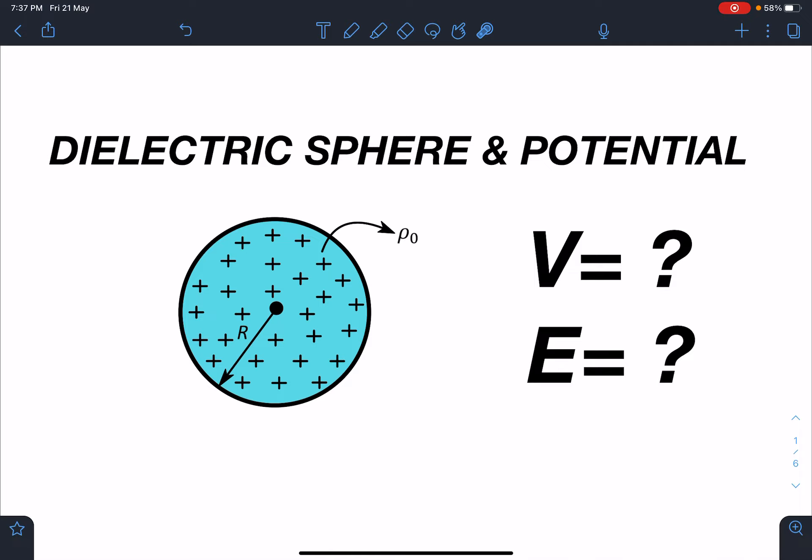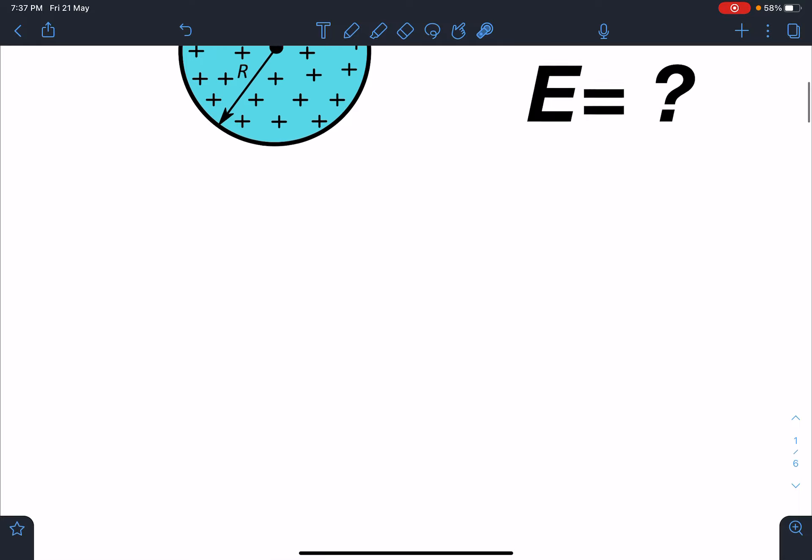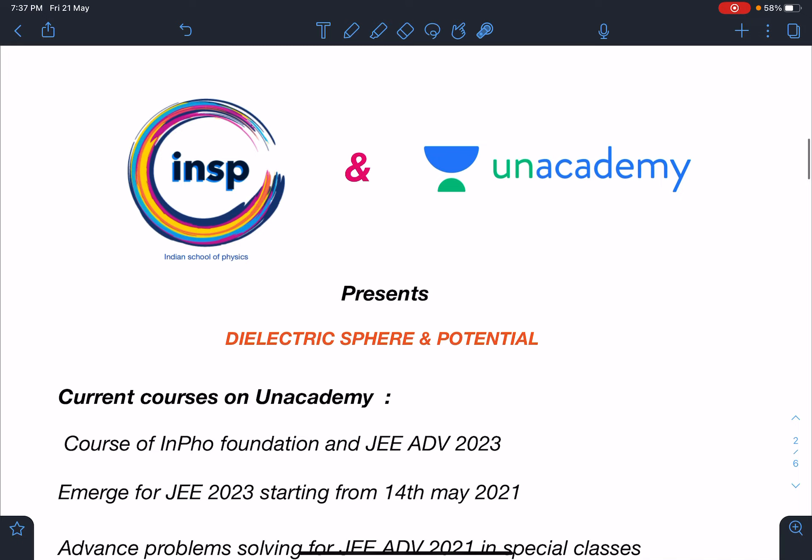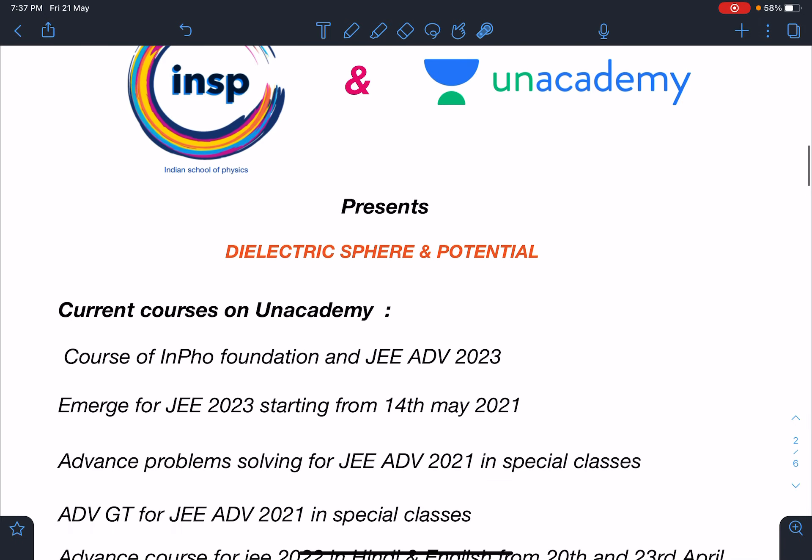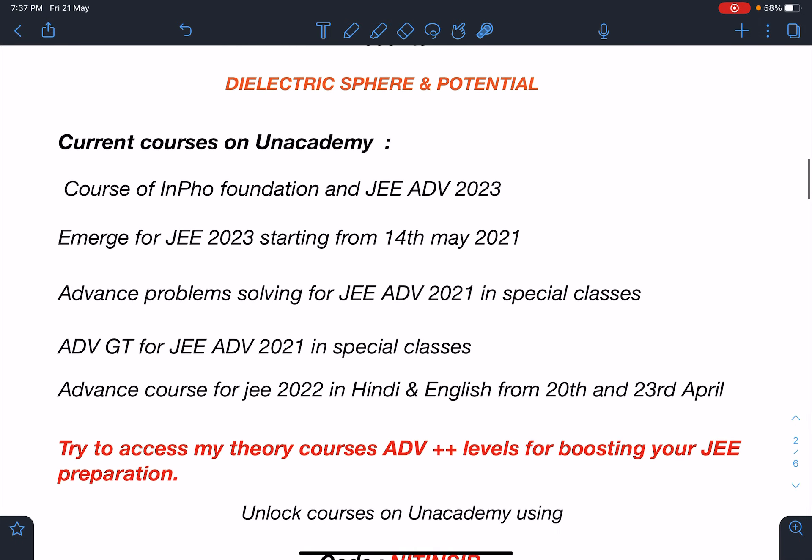This is Nitin here and today I have come up with a very important concept of JEE Advanced. This is a question which can definitely come in the exam. This video is brought to you by Indian School of Physics and Unacademy together and name of this problem is dielectric sphere and potential.